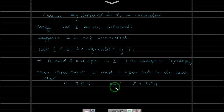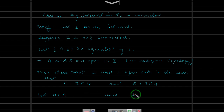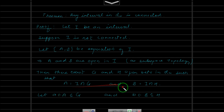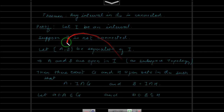Now let us take a point a ∈ A and a point b ∈ B. Since A ⊆ G and B ⊆ H, we have a ∈ G and b ∈ H. Since A and B are a separation, A ∩ B = ∅, so a ≠ b. By the law of trichotomy, either a < b or a > b. Without loss of generality, assume a < b.